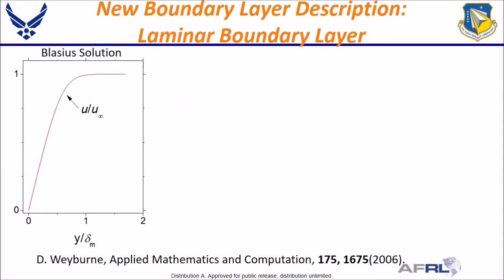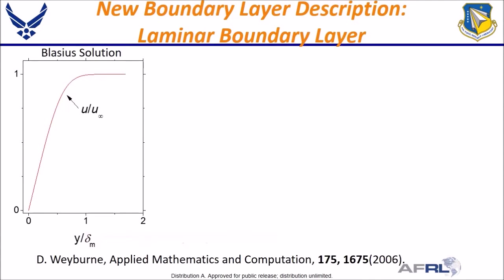All right, that was the traditional method, so let's jump right to the new boundary layer description. The development came about from looking at the Blasius solution for laminar fluid flow along the wall. Start by plotting u at xy divided by u sub infinity versus the scaled boundary layer thickness, where the wall scaling is given by delta sub m — one of the new boundary layer thickness scales we will describe later on.